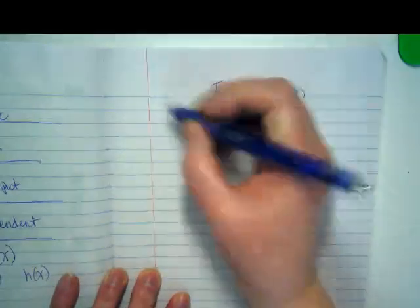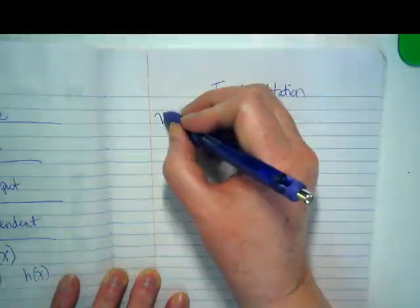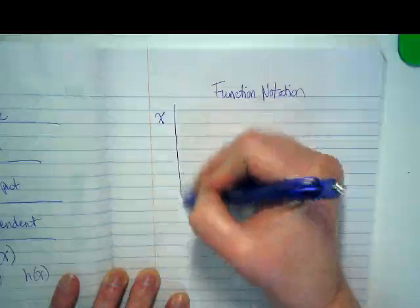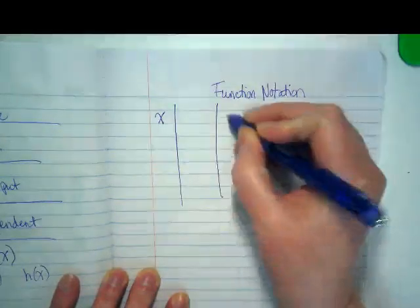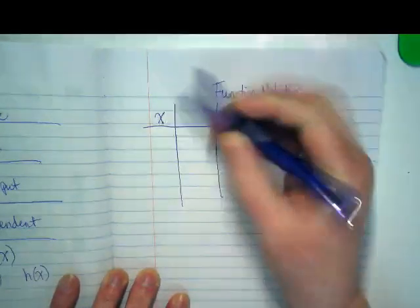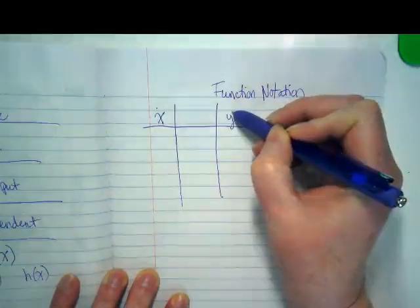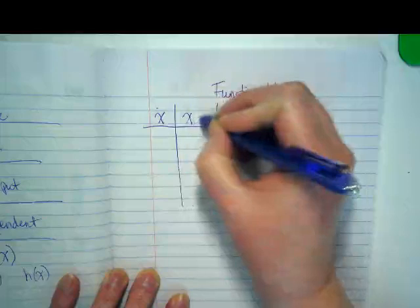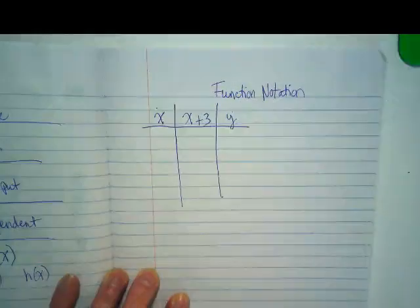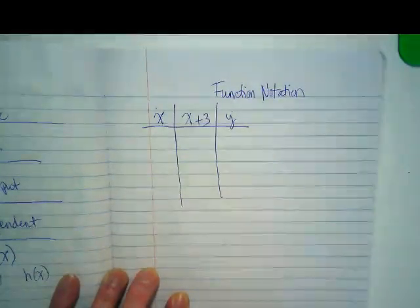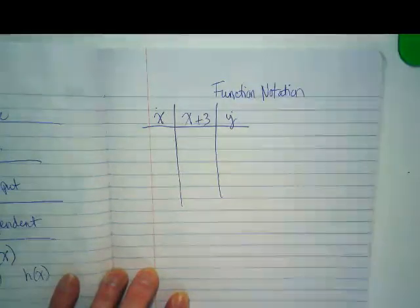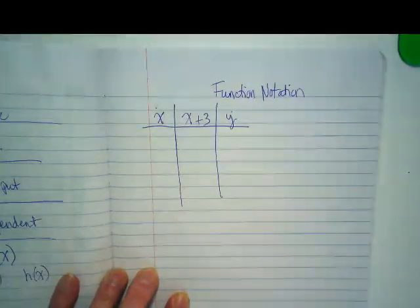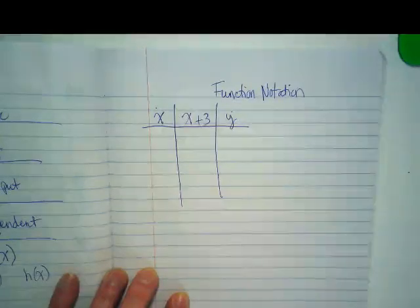This is related to this. So, we often have tables where this is the input, and this is the output, and this is the rule. So, I'm going to put x plus 3. We can make up what the inputs are. Give me some numbers that we can input for this.